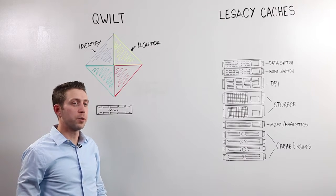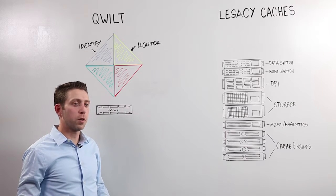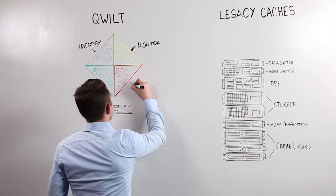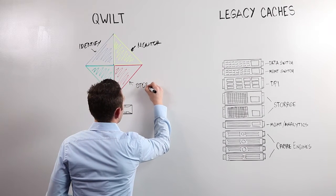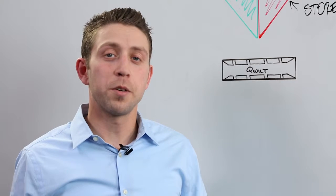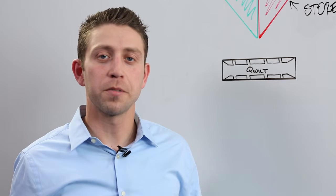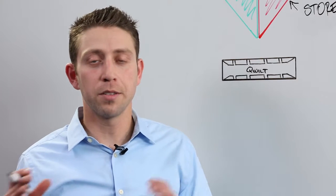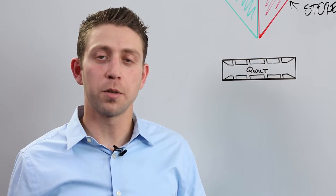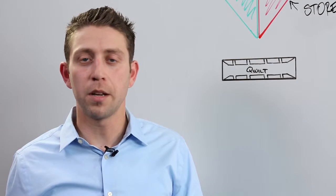The next step is to store the cached content locally on the device. Quilt's QB series comes with multi-tier onboard storage optimized exclusively for caching and delivering high quality video to a large number of consumers in real time.